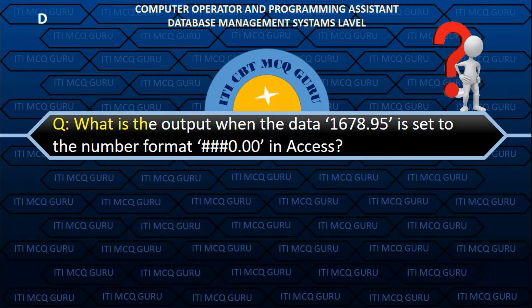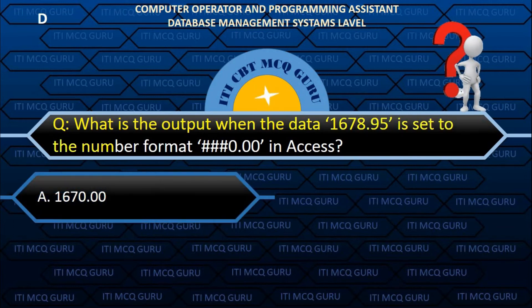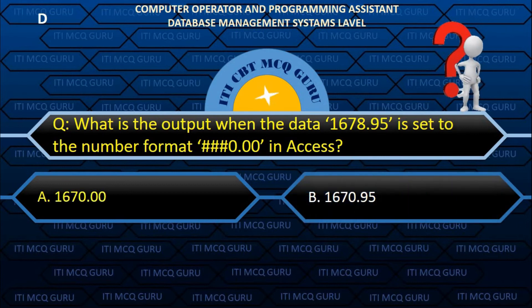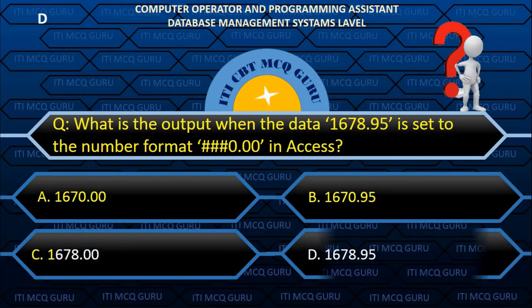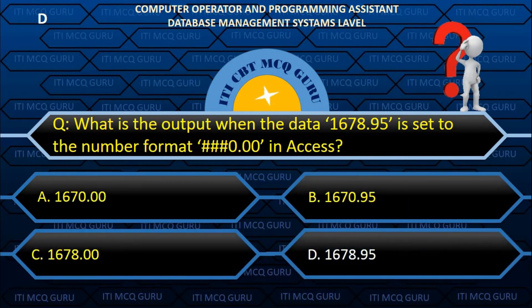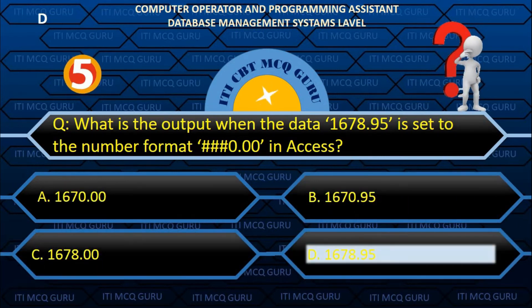What is the output when the data 1678.95 is set to the number format #0.00 in Access? D. 1678.95.